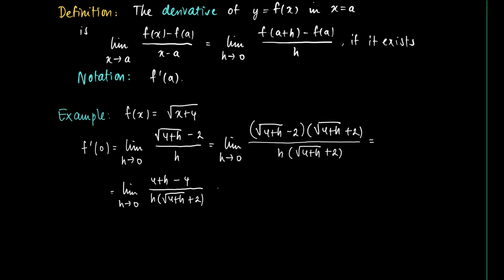The 4s in the numerator cancel, and we're left with h. But h also cancels against the h in the denominator. So we get the limit of h to 0 of 1 over the square root of 4 plus h plus 2, and substituting h equals 0 gives us 1/4.